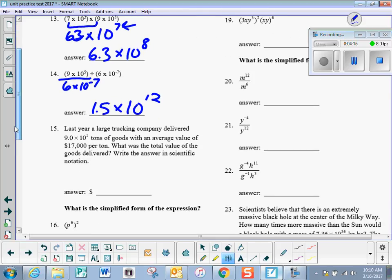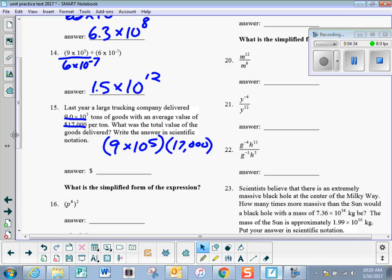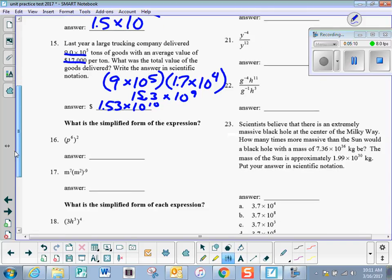Number 15, we have a truck that delivered this many tons of goods, and this is the value of each ton. So we need to multiply these numbers together, 9 times 10 to the 5th, times 17,000. So giving my handy-dandy calculator, I have 17,000 times 9. I think it would be easier to write this in scientific notation, so I'm going to do that. 1.7 times 10 to the 4th. And so then, if I just go 9 times 1.7, I get 15.3. So I have 15.3 times 10 to the 9th. That is not in scientific notation, so I make it smaller by 10 and make that bigger by 10. And that's how I get the answer, 1.53 times 10 to the 10th.